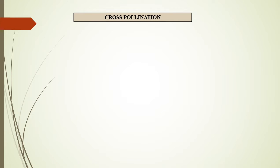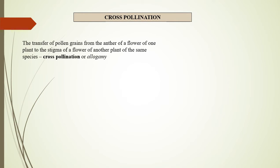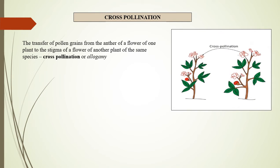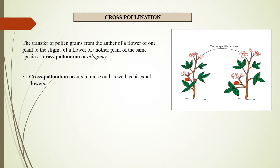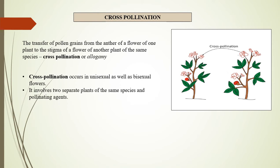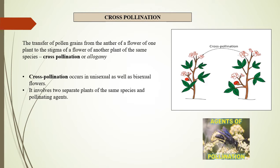The transfer of pollen grains from the anther of a flower of one plant to the stigma of a flower of another plant of the same species is known as cross-pollination or allogamy. Cross-pollination occurs in unisexual as well as bisexual flowers. It involves two separate plants of the same species and pollinating agents.